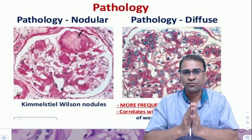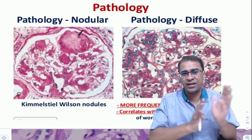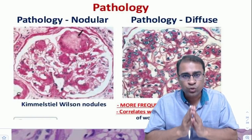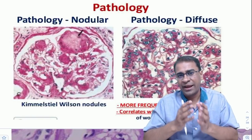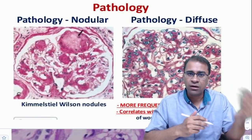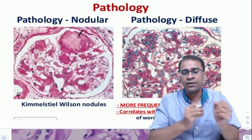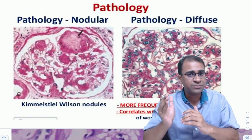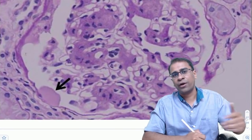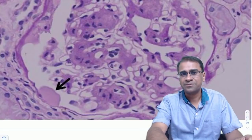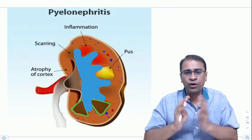Diabetes has two types of findings: diffuse and nodular. The nodular finding is the Kimmelstiel-Wilson lesion — the most specific finding of diabetic nephropathy — while the most common finding is diffuse glomerulopathy. Diagnosis is made by microalbuminuria (albumin 30–300 mg/24-hour urine) or the albumin-to-creatinine ratio. Other findings include capsular drops, fibrin caps, and the diffuse and nodular glomerulopathy.